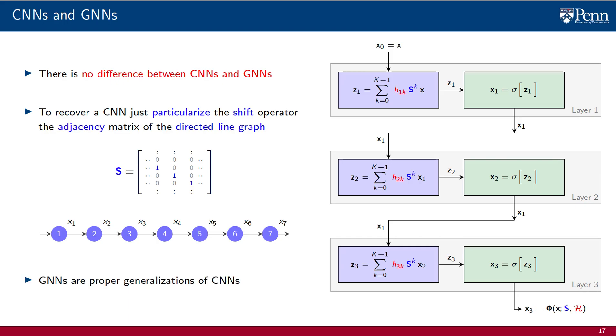If you didn't know what CNNs were, this lecture is a twofer. You get to learn what GNNs are, and you get to learn what CNNs are. If that doesn't excite you, do remember that the ability to recover CNNs as GNNs implies that graph neural networks are proper generalizations of convolutional neural networks. We can obtain the latter as a particular case of the former.